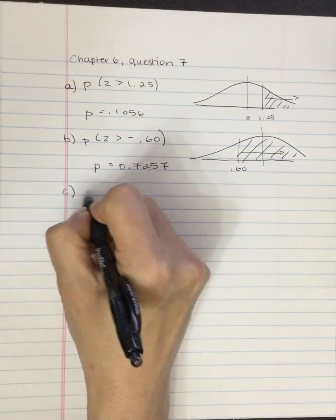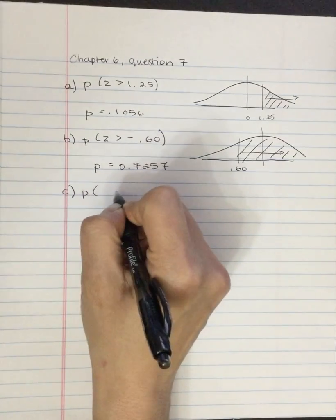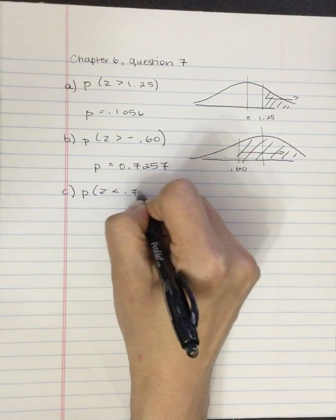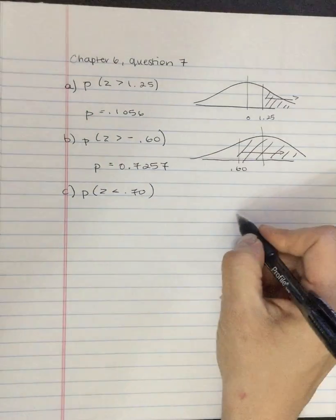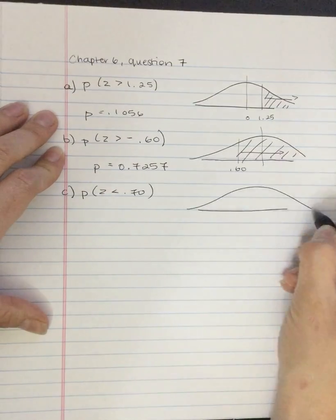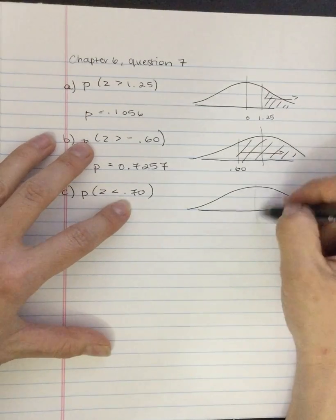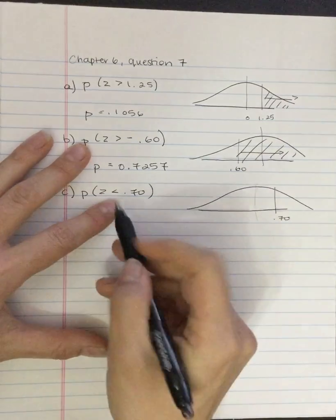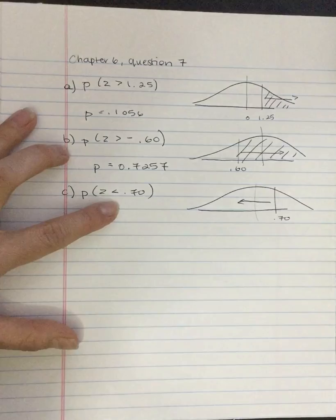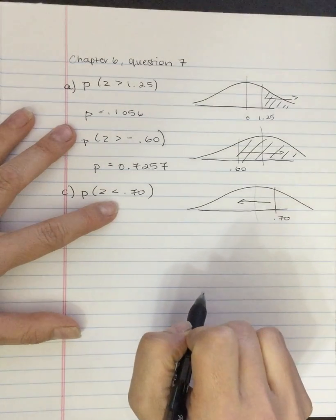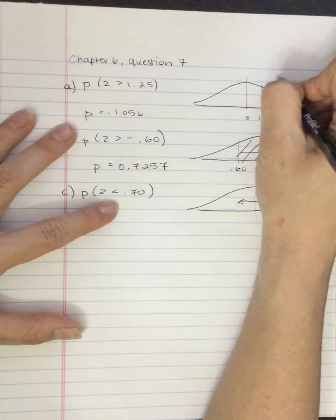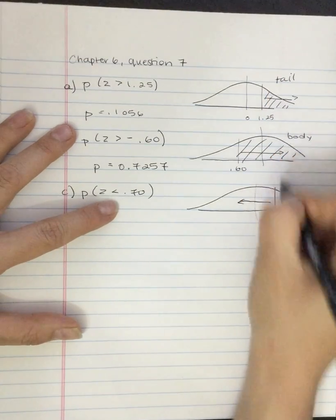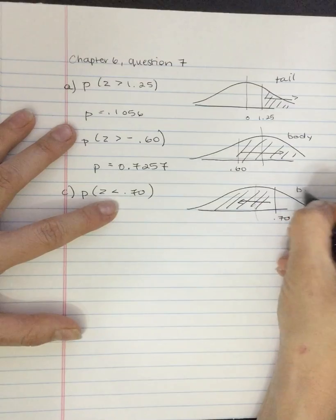Question C asks the probability that a Z score is less than 0.70. So if we draw this out, this Z score is over here. But now we're asking for less than. So we're asking for this part, and that is the body. So this is up here. This is tail, body.